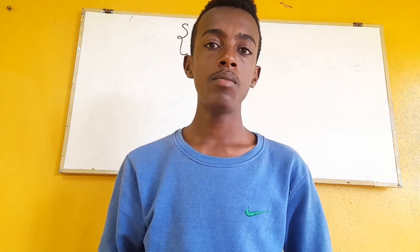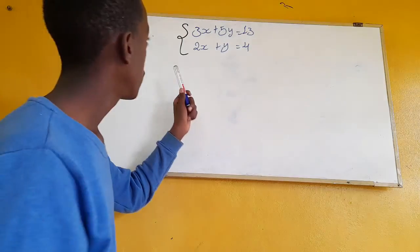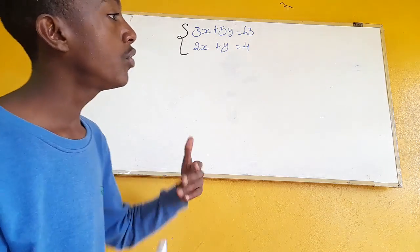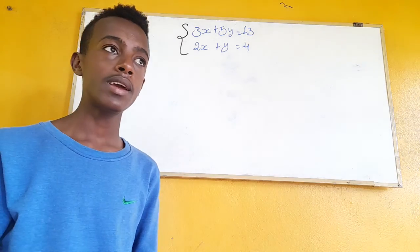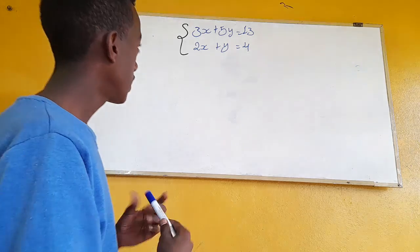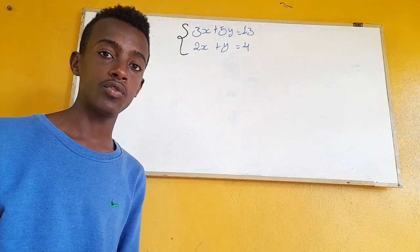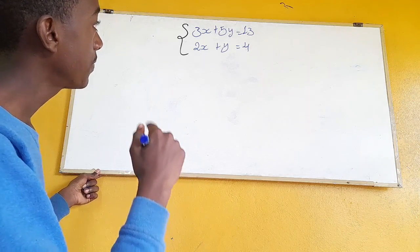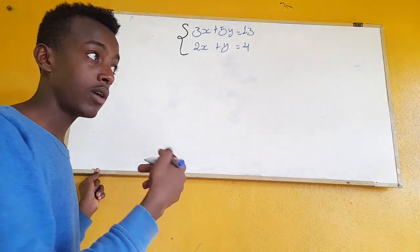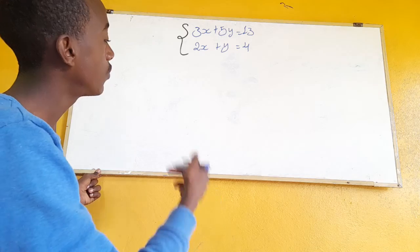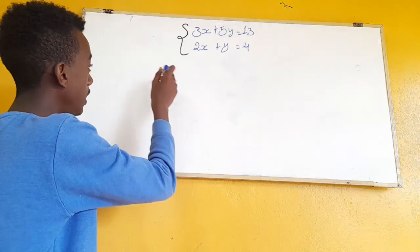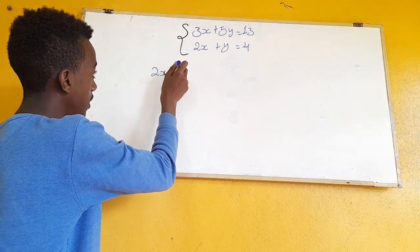How to solve an equation involving two variables using the substitution method. We have some equation with all variables. In this case, we have: 2x plus y is equal to 4.